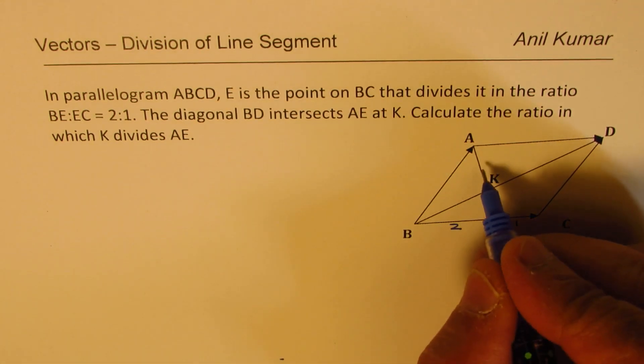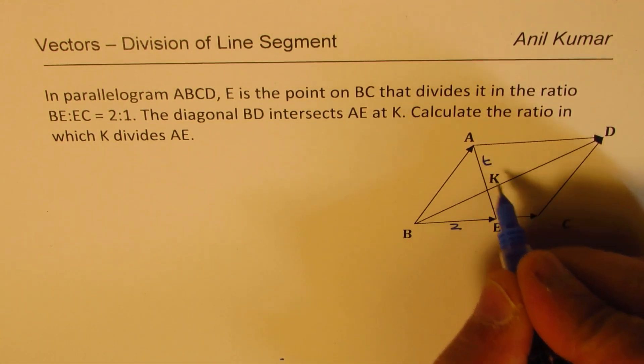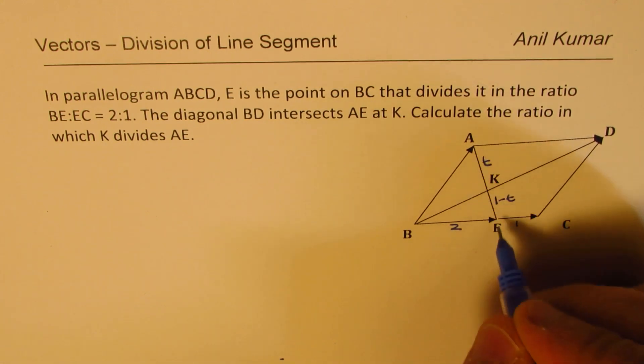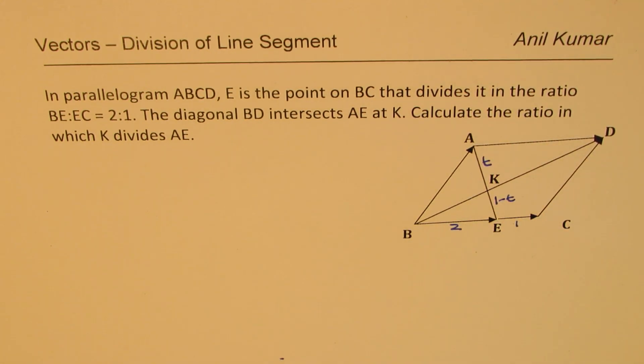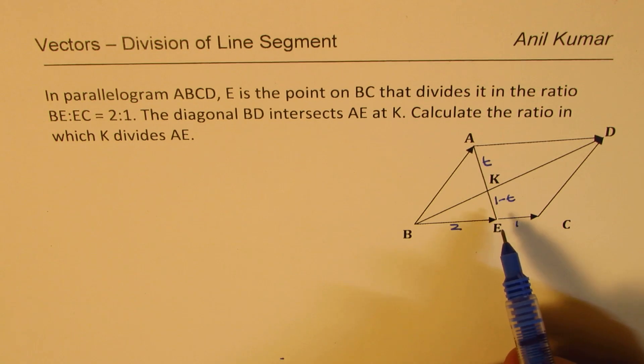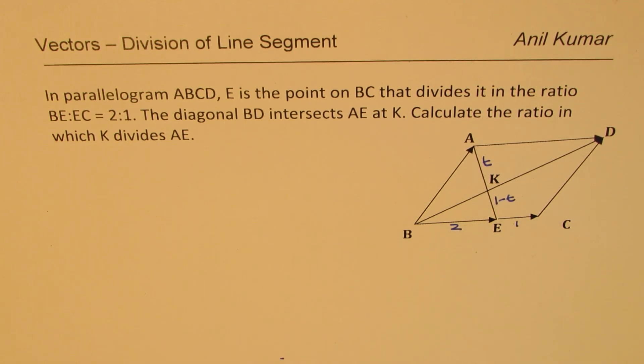Let us say that the ratio is T and this is 1 minus T. Taking such variables helps us since if you add them up, you get 1. So it's kind of better to work with such ratios. Let us see how to solve this.